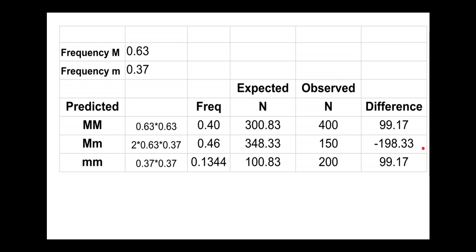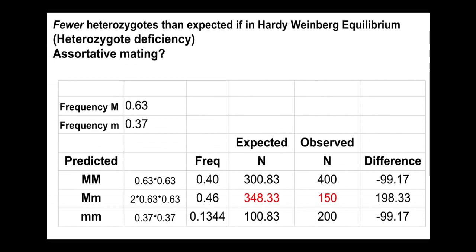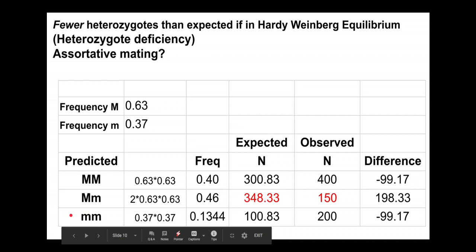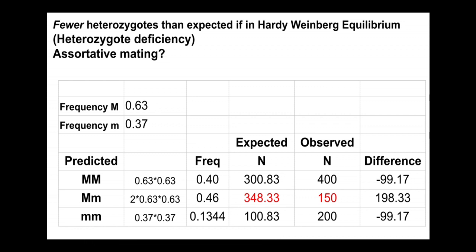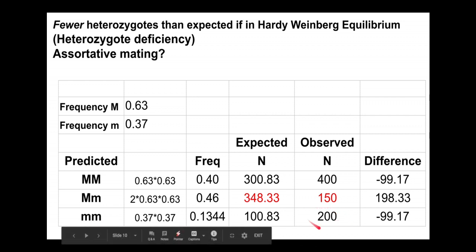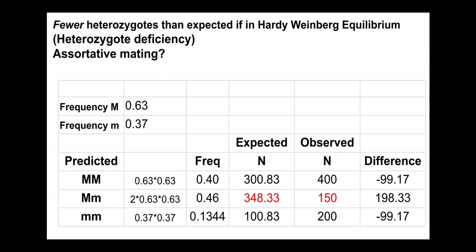So here we have a heterozygote deficit. Why could this happen? When we have non-random mating, like is mating with like. The little m little m flowers have bees moving pollen only between little m little m flowers, so these individuals always produce little m little m offspring. Similarly, big M big M individuals have pollen moved primarily between big M big M individuals, so they produce big M big M offspring. This non-random mating favors an excess of observed homozygotes of both classes.